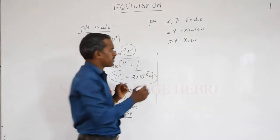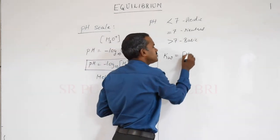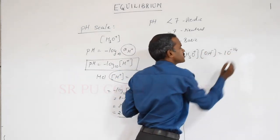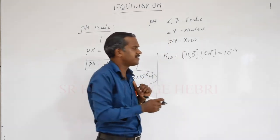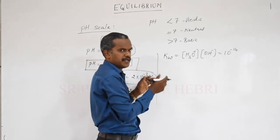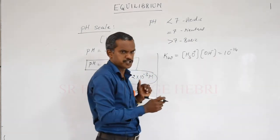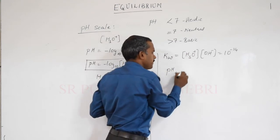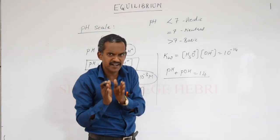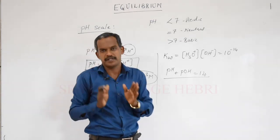We know the ionic product of water: Kw = [H3O+][OH−] = 10⁻¹⁴. Taking the negative logarithm on both sides gives: pH + pOH = 14. From this, the pH scale ranges from 0 to 14: 0 to 7 is acidic, 7 to 14 is basic, and 7 is neutral.